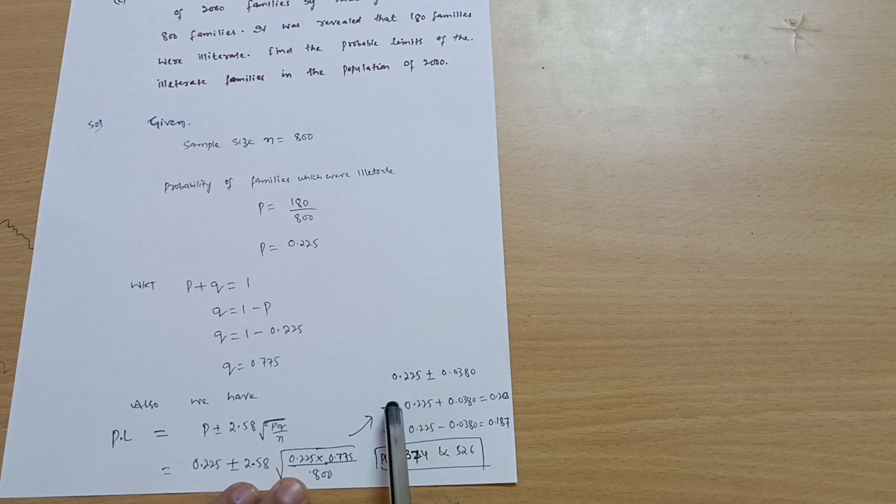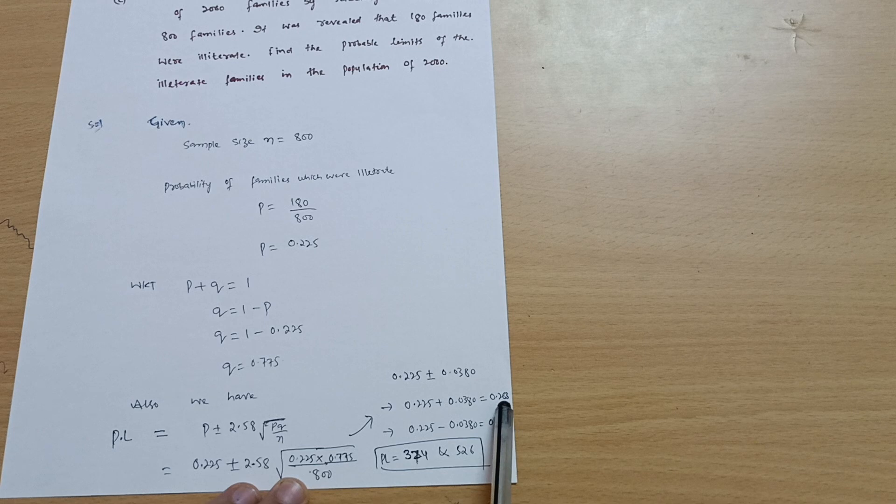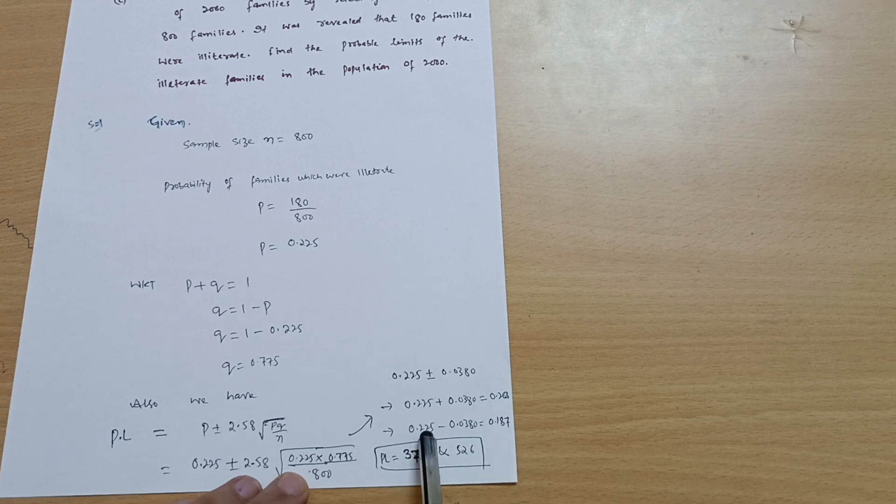0.225 plus 0.0380, you will get 0.263. Next is 0.225 minus 0.0380, which is equal to 0.187.